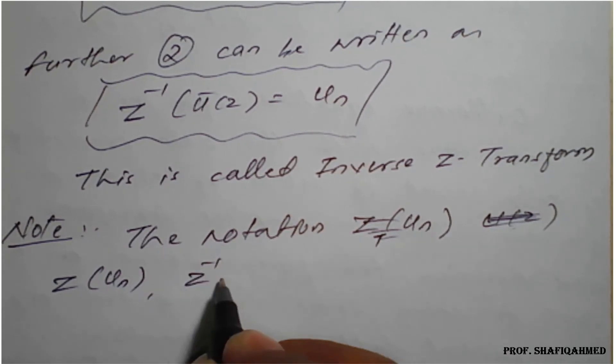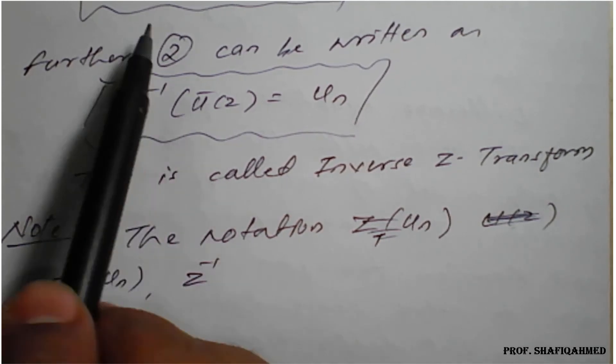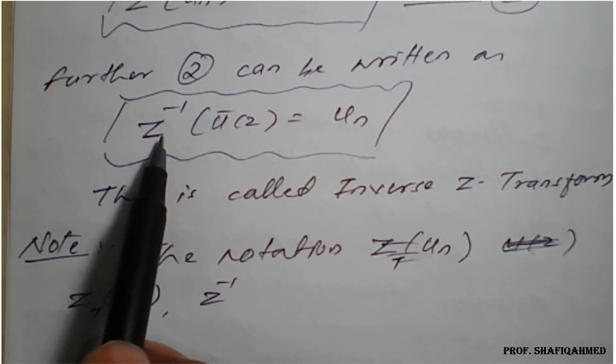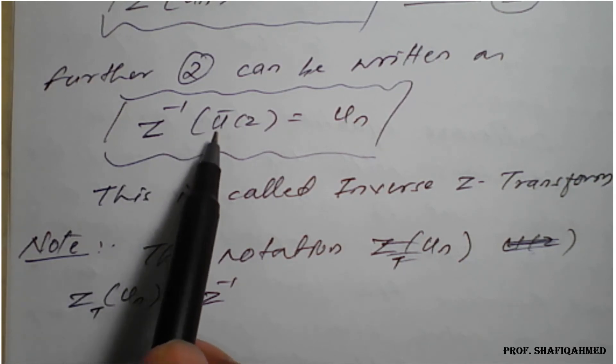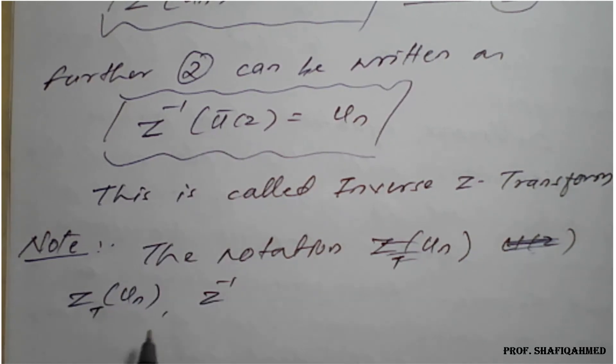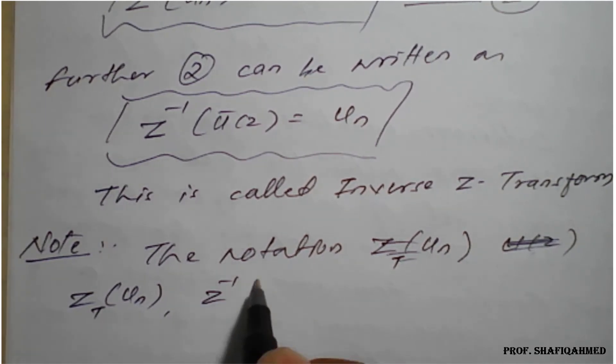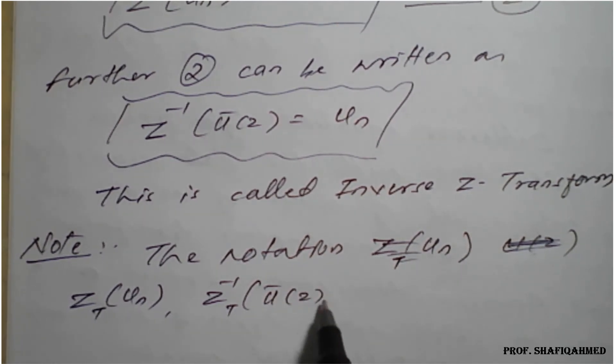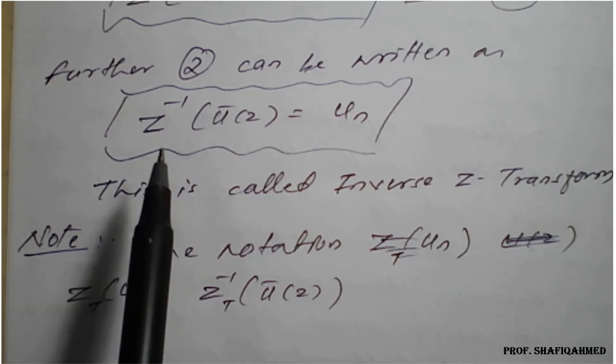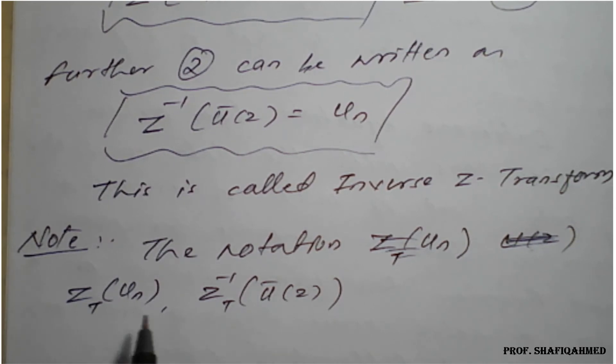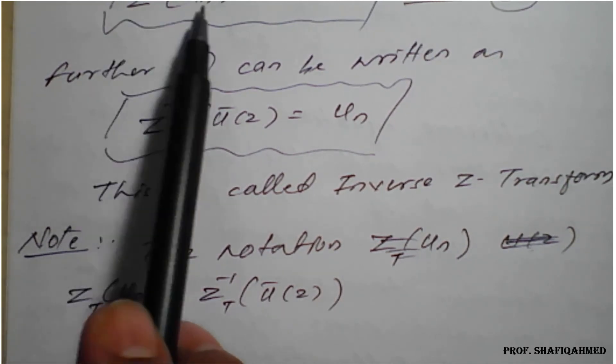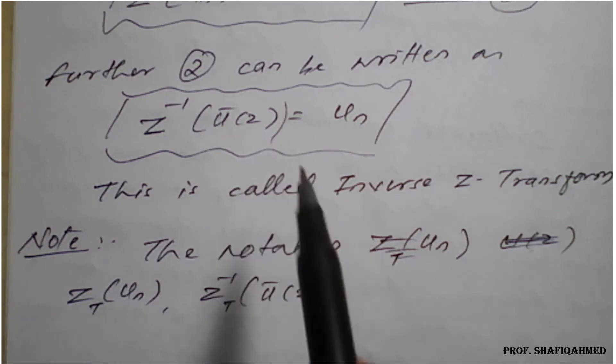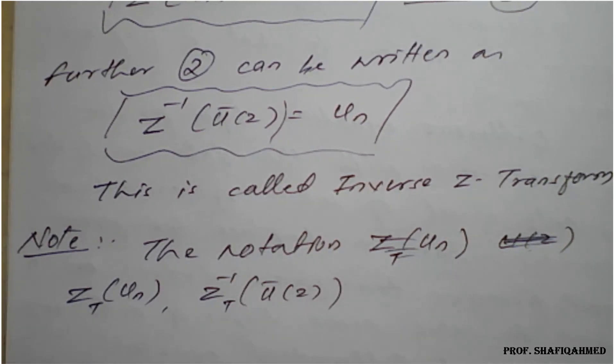And Z inverse of—so you can observe Z inverse of u'(z) is there. So at that time we can use this one as Z inverse of Z_t of u'(z) also. Means anyone—so in the main definition I have taken only Z, so here just I am showing the notation: instead of using Z{u_n}, they may use Z_t{u_n}, and instead of Z inverse of u'(z), they may use Z inverse of t of u'(z) also.